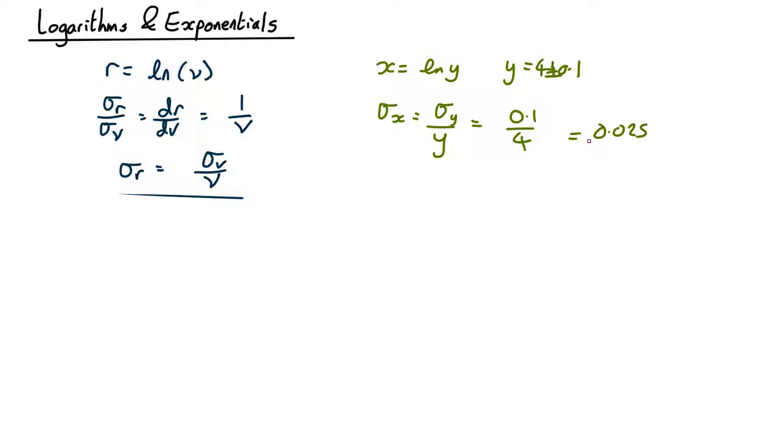All pretty easy. How about exponentials? Let's imagine that our resultant variable is e to the input variable. Once again differentiate sigma r over sigma v equals differential of e to the v which is e to the v.